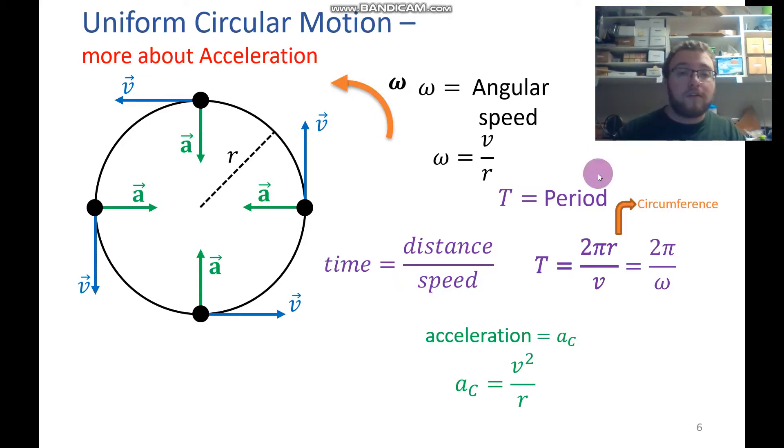And we can get that acceleration is equal to omega squared times r, or 4π squared r over period squared. And all of these are equally valid and will all give you the centripetal acceleration.